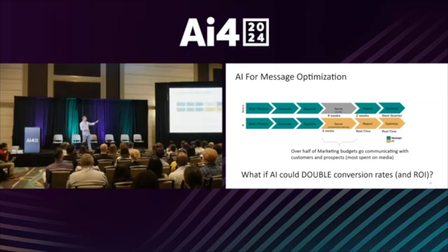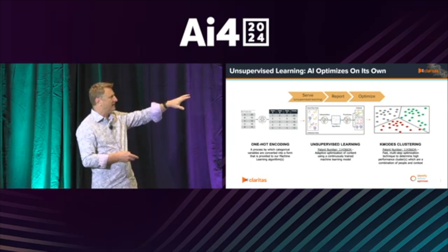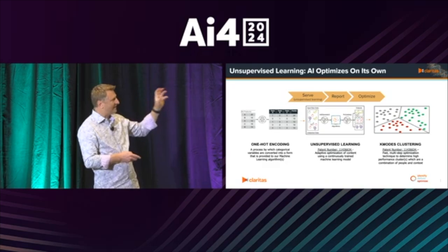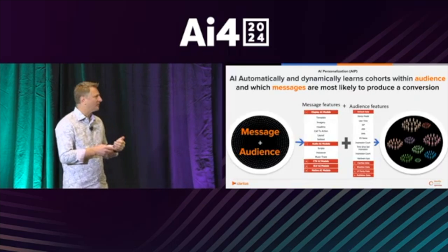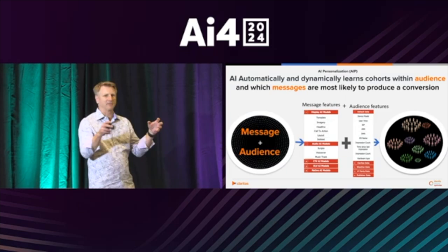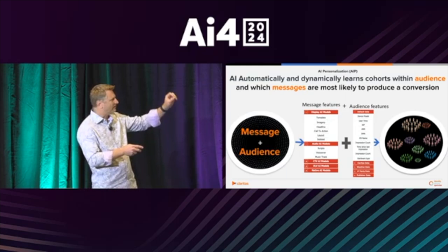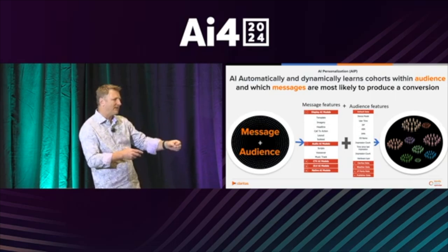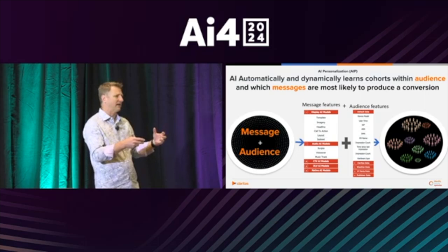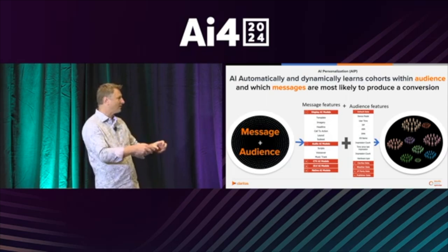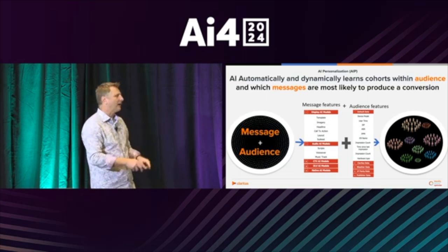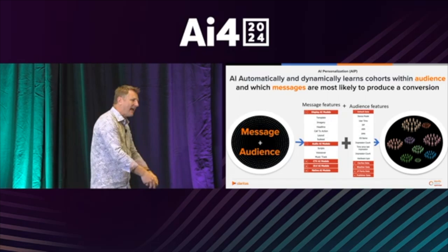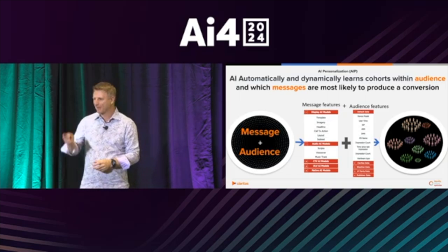This is what Claritas is doing with their technology of one-hot encoding — looking at any data coming in with unsupervised learning, clustering who should get what messages. The breakthrough is breaking out the different parts of a message into features: differences in templates or audience features like time of day, city, Claritas segment data, or weather. The AI takes all that data and looks for combinations that predict your KPI — in Major League Baseball's case, that's selling a ticket; for Shell, it might be downloading an app.